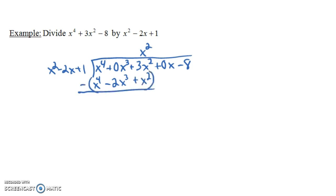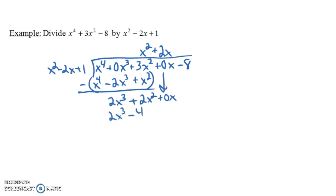Now we do x squared times x squared minus 2x plus 1: that's x to the fourth, minus 2x cubed, and plus x squared. When we subtract, x to the fourth minus x to the fourth goes away. We have 0x cubed plus 2x cubed, giving 2x cubed. And 3x squared minus x squared gives us 2x squared. We bring down the 0x. What times x squared gives us 2x cubed? It's 2x. Then 2x times x squared is 2x cubed, 2x times minus 2x is minus 4x squared, and 2x times 1 is 2x. When we subtract, the 2x cubes go away. We have 2x squared minus a minus 4x squared, that's plus 4x squared, giving 6x squared.